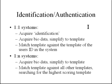In one-to-one biometric systems, the user types in their identification, the system acquires the biometric data, simplifies it to a template, and attempts to match the enrolled template against the presented template. It's only comparing two templates. A score of similarity is generated, and if it exceeds a certain threshold, the person is authenticated.